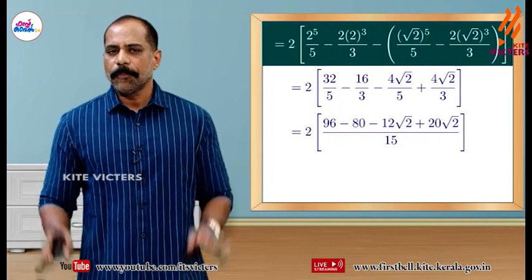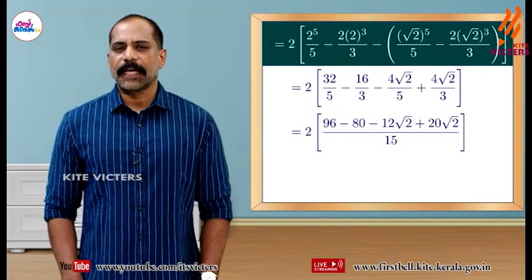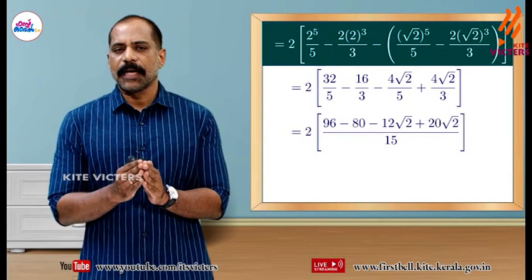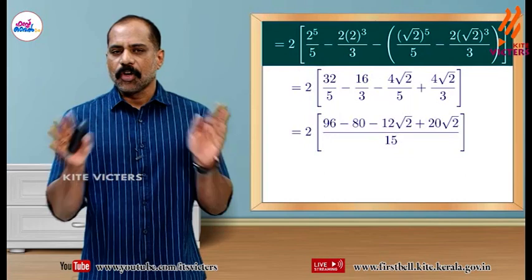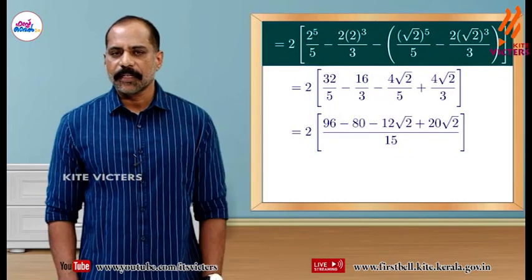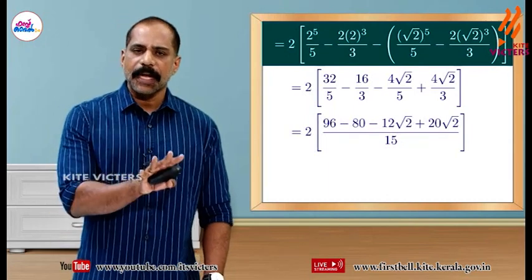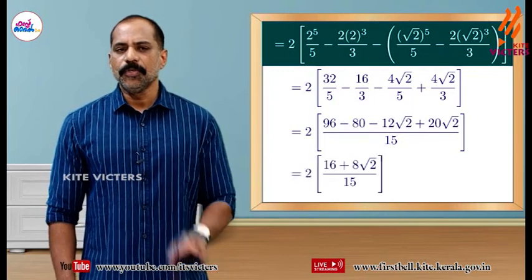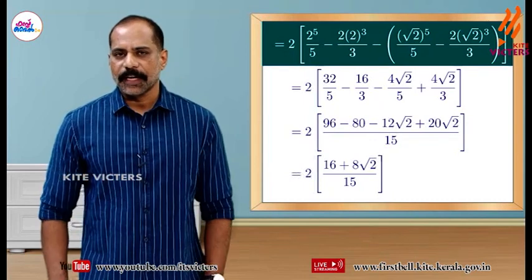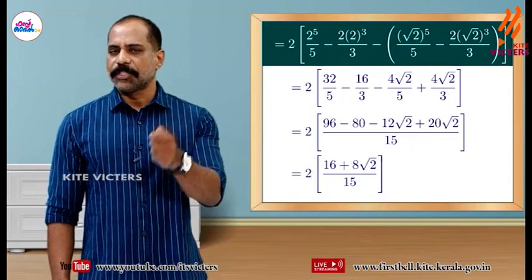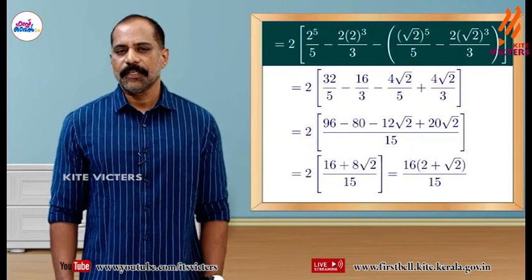The denominator is 15. The numerator gives 2 into (96 minus 80 minus 12 root 2 plus 20 root 2) divided by 15, which simplifies to 2 into (16 plus 8 root 2) divided by 15. That is 2 into 8 into (2 plus root 2) divided by 15, giving 16(2 plus root 2) divided by 15.